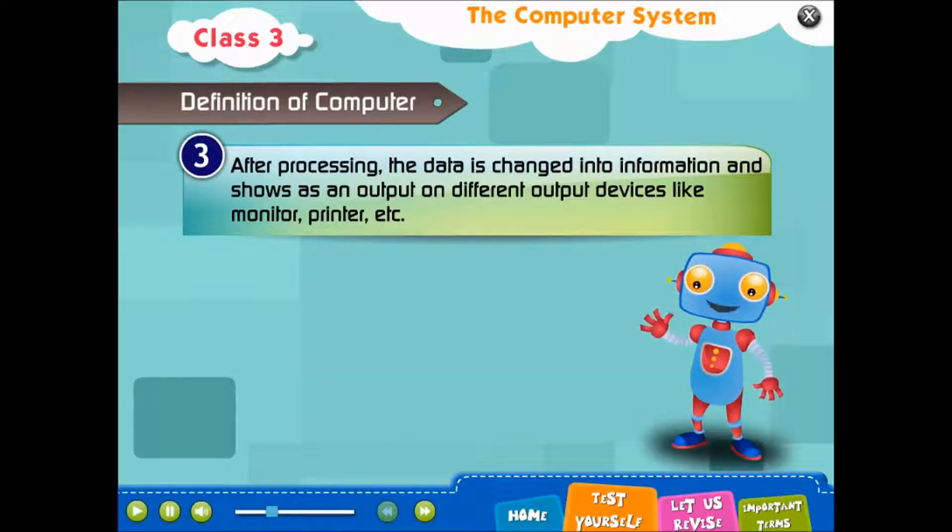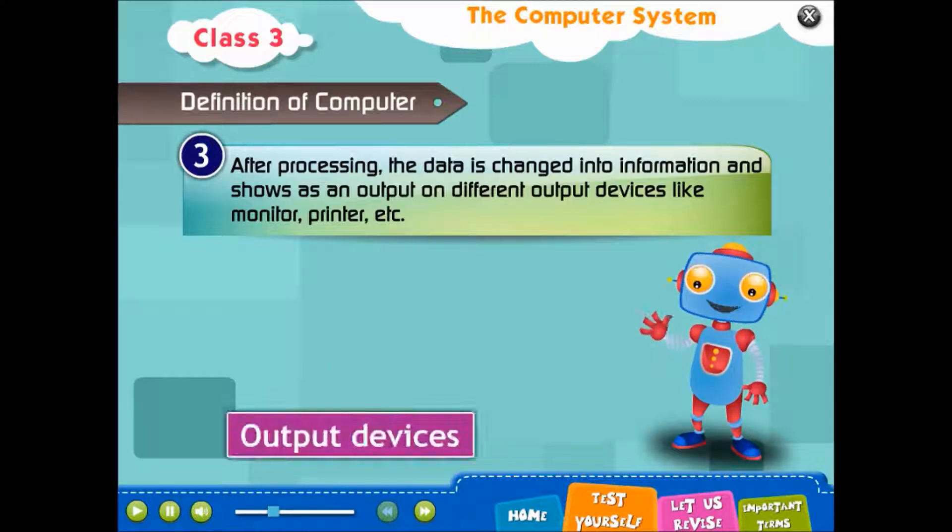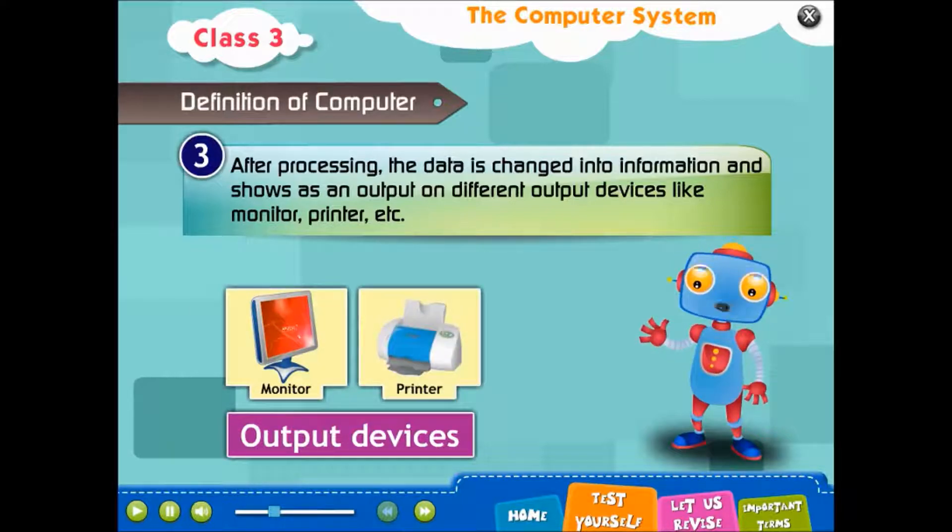3. After processing, the data is changed into information and shows as an output on different output devices like monitor, printer etc.